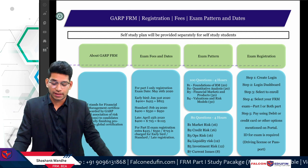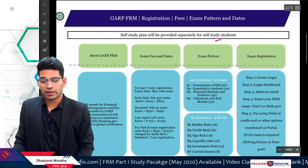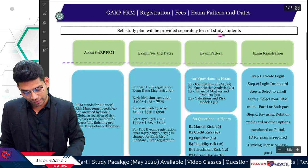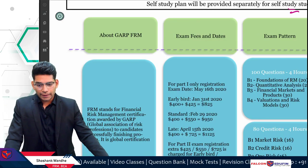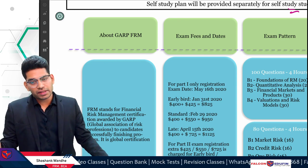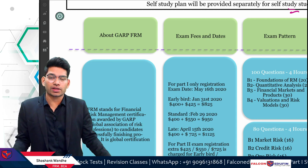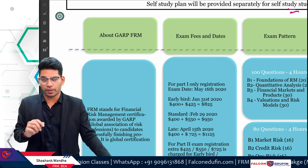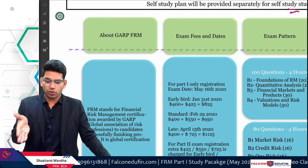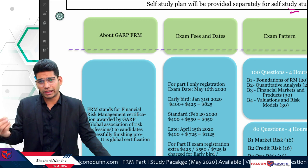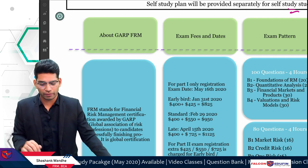The broad coverage of this class is the GARP FRM registration process, the study plan we will use in classes, and the study material. FRM stands for Financial Risk Management, conducted by the Global Association of Risk Professionals. The certification is awarded to candidates who successfully complete the program — you have to pass Part 1 and Part 2, and then accumulate two years of work experience, which can include post- or pre-qualification experience.